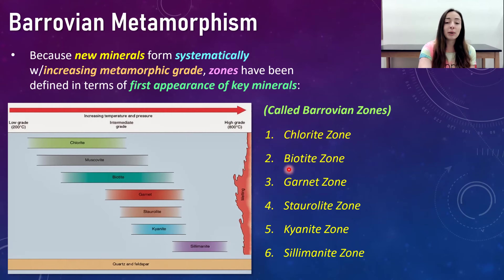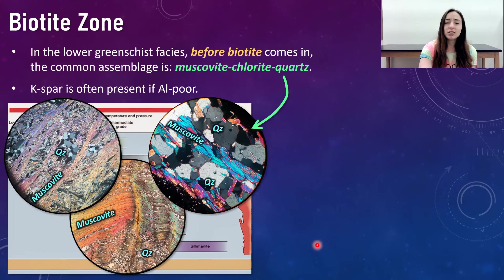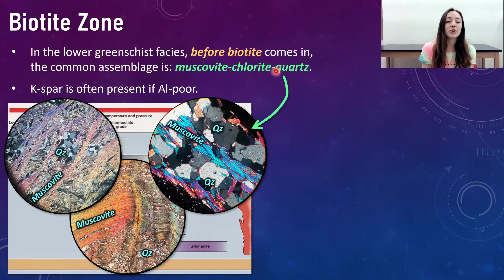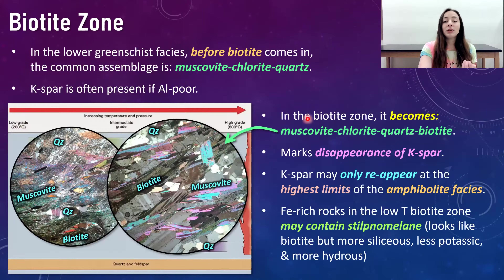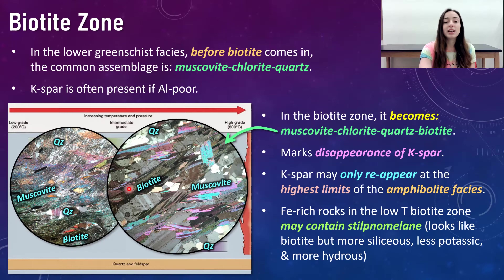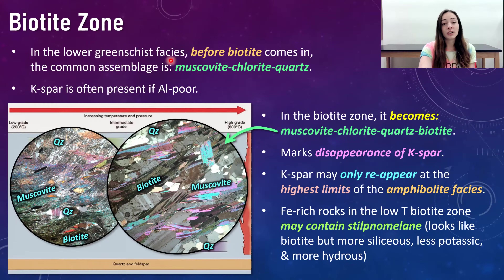The Barrovian zones include the chlorite zone, the biotite zone, the garnet zone, the staurolite zone, the kyanite zone, and the sillimanite zone. In the lower greenschist facies before biotite comes in, the common assemblage is muscovite, chlorite, and quartz. In the biotite zone, after the lower greenschist facies, once biotite comes into play, the assemblage becomes muscovite, chlorite, quartz, and biotite. The biotite zone also marks the disappearance of K-spar or potassium feldspar, which was sometimes present in the lower greenschist facies before biotite came in.